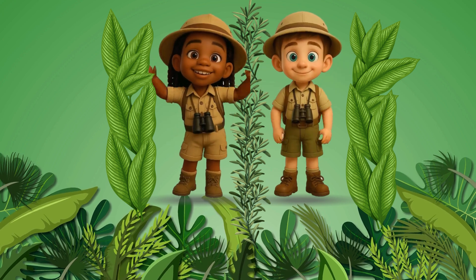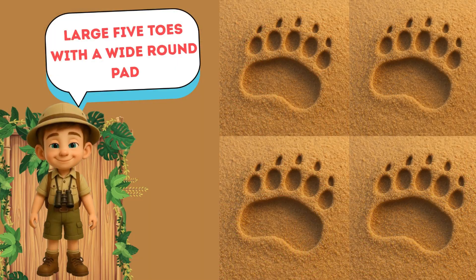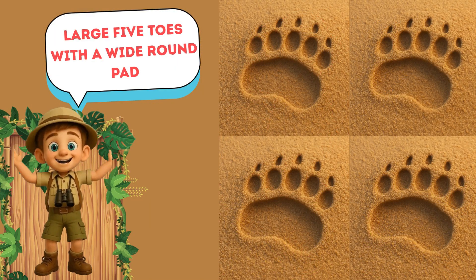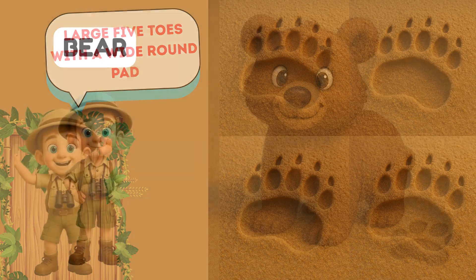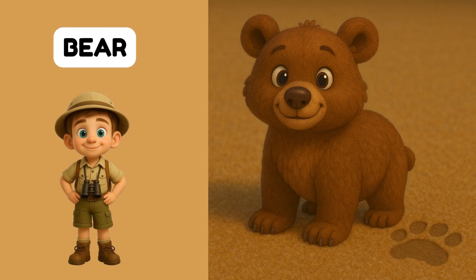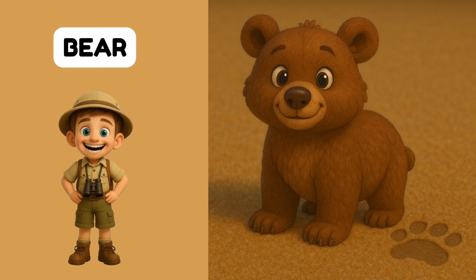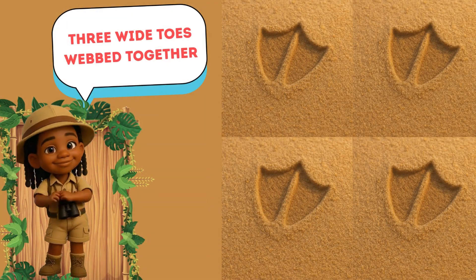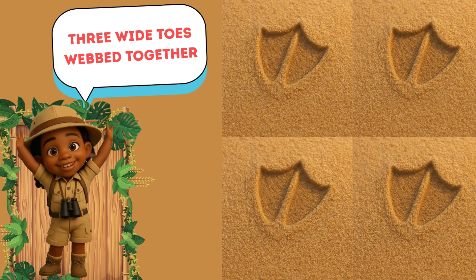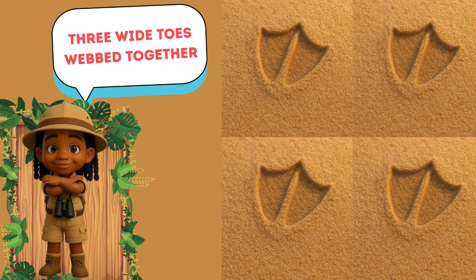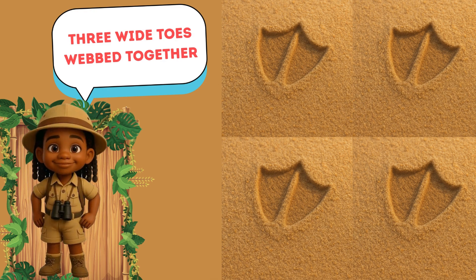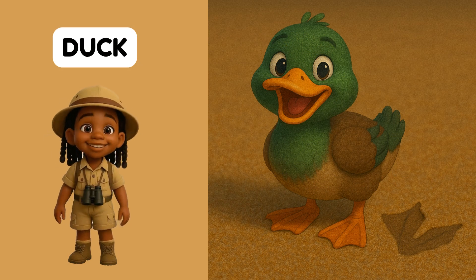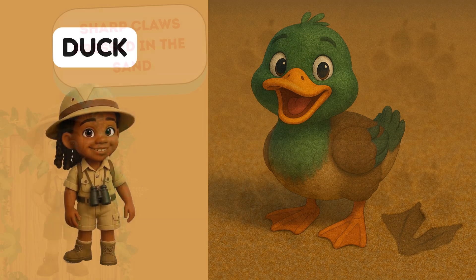Whose footprints are those? Large five toes with a wide round pad — that's a bear track. Whose footprints are those? Three wide toes webbed together — that's a duck track.